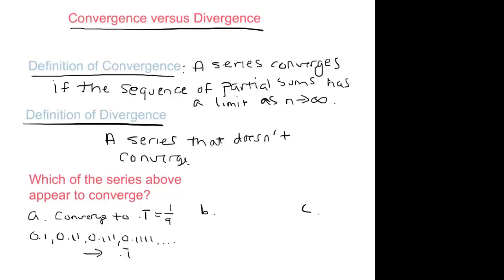Right, for b, our list of partial sums was 10, 30, 60, 100, 150, and then it was just going to keep going. For b, is that list approaching anything? I mean, it's approaching infinity, which is not a number, so we would say it diverges.